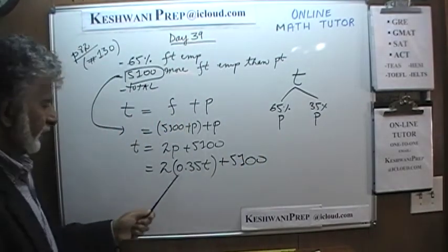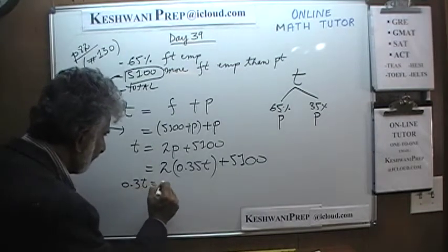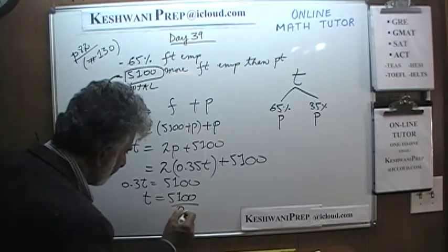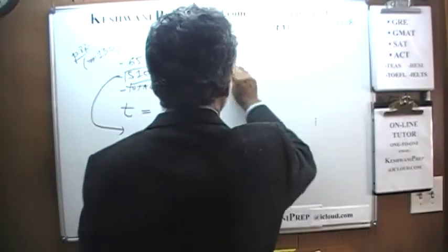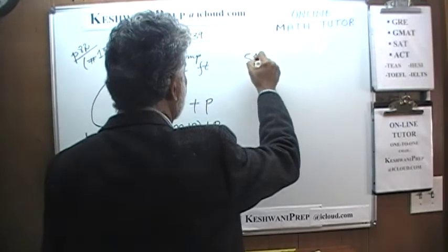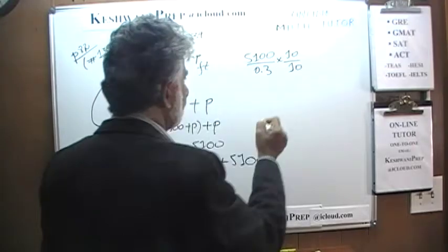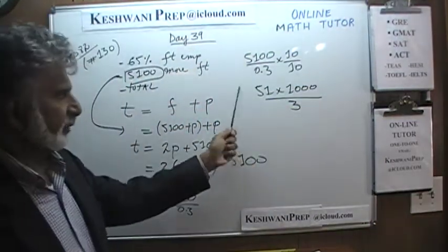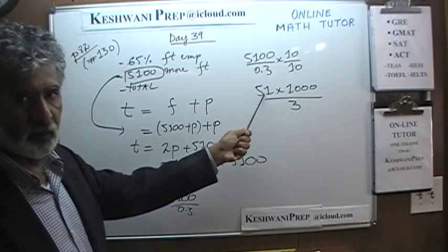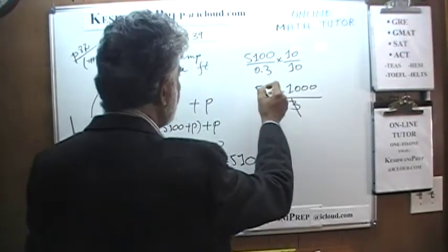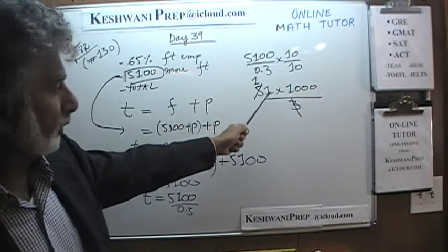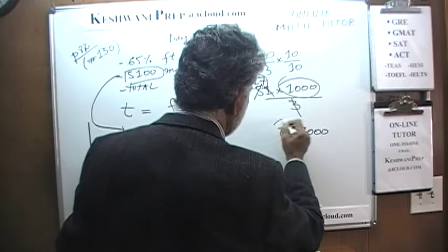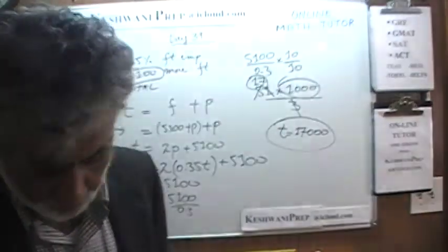That gives us 0.3T equals 5100, and therefore T equals 5100 divided by 0.3. Let's multiply top and bottom by 10 to get rid of the decimal, giving us 51,000 over 3. We divide top and bottom by 3 — since 5 plus 1 is 6, which is divisible by 3 — and we get 17,000. The total number of employees that the firm has is 17,000.